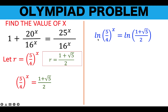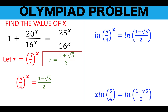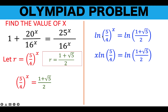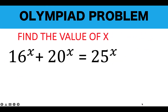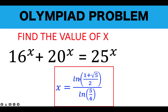This is the equation we use to find x. Taking the natural logarithm of both sides, we apply the logarithm power property — since ln is logarithm to base e — to bring down the exponent x, giving us x times ln of 5 over 4 equals ln of 1 plus the square root of 5 over 2. Solving for x, we divide both sides by ln of 5 over 4. The value of x that satisfies the original equation is x equals ln of the golden ratio, 1 plus square root of 5 over 2, divided by ln of 5 over 4.